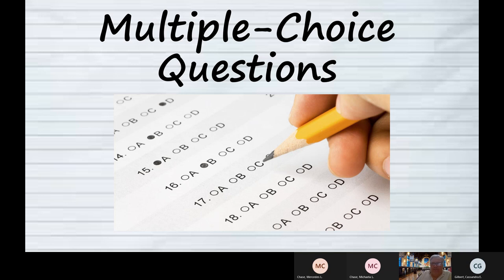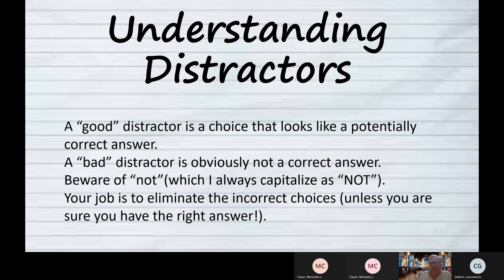The multiple choice question — or as some teachers call it, multiple guess — there is a particular system for defeating a multiple choice question. And no, it's not 'when in doubt, mark C,' because that doesn't always work. There's a technical term you should know: when we give you a multiple choice question, we think a lot about the wrong answers, which are called distractors.